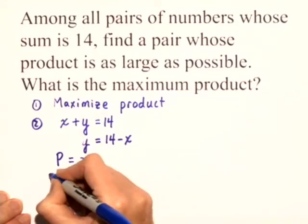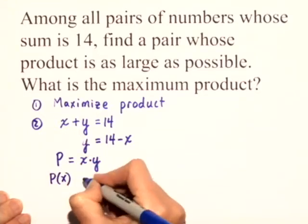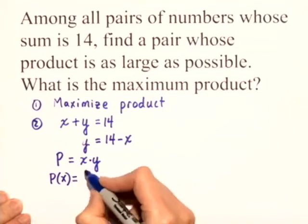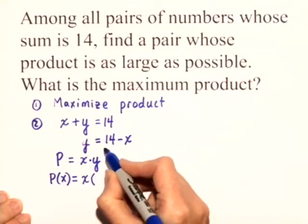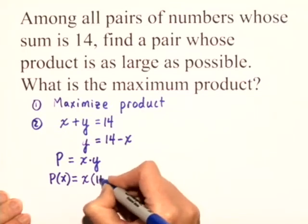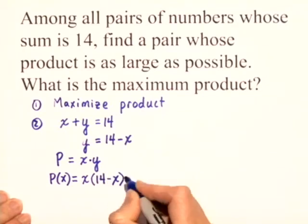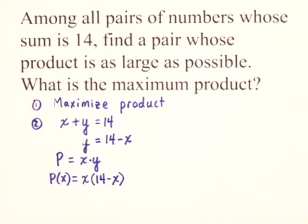But in terms of x, our product, if we write it just as a function of x, is going to be x times y, which we already know is 14 minus x. So in step 2, we've written the product as a function of x.